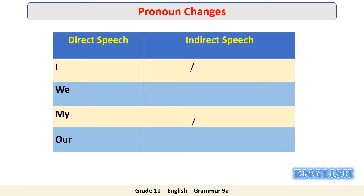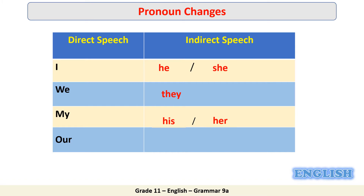Based on the examples we've seen, we can summarize the changes in pronouns in the following table. 'I' becomes 'he' or 'she.' 'We' becomes 'they.' 'My' becomes 'his' or 'her,' and 'our' becomes 'their.'